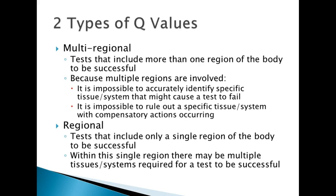The second type of Q-Value is regional. A single-region Q-Value allows us to look at specific tissues within the region and gather more detail. Using Q-Values, we can determine if we have properly assessed the appropriate tissues in each region.